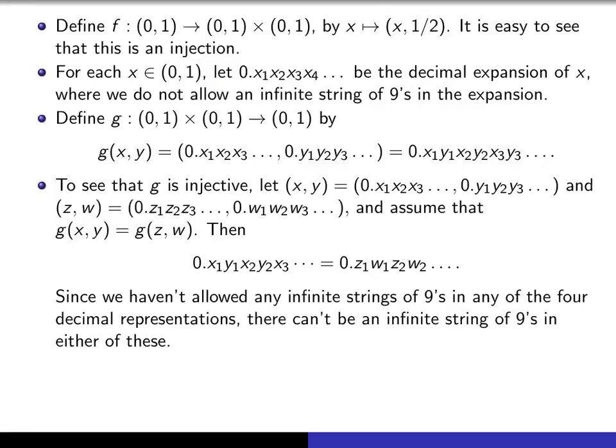Now it's quite easy to see that the resulting function g is injective. So to see that, let's give ourselves two elements of the domain, and I've used this obvious notation of writing their decimal expansions out. And let's assume that the g values are the same, and that means that when I create this new decimal by alternating the digits of the expansions of x and y, and also of z and w, so to say that these are equal is to say that these decimal expansions are equal.